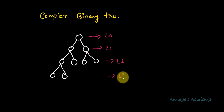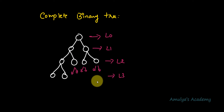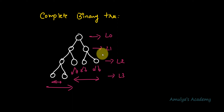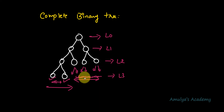Now for level 3, the last level: some positions are not filled, but the nodes that are present are on the left side. As stated, for the last level, either it is completely filled or nodes are filled from left to right. Here, the left side is filled and the right side is empty — that is acceptable, so this is a complete binary tree.